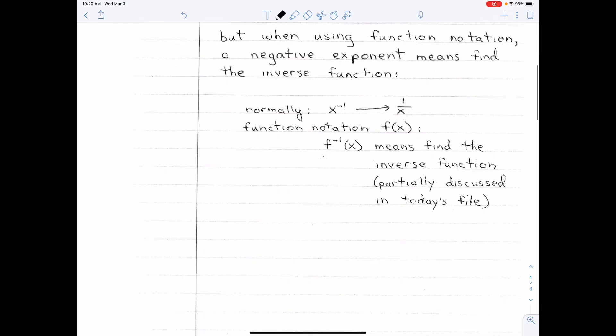So again, normally, x to the negative first would be one over x. F to the negative one of x means find the inverse function. Which we're gonna discuss today.